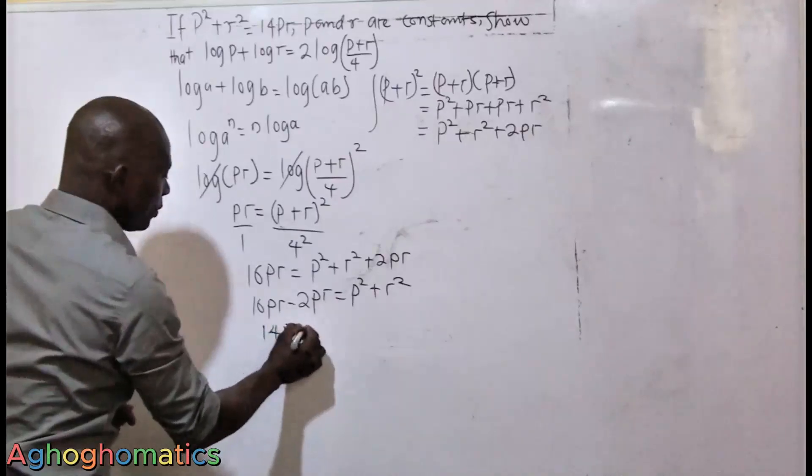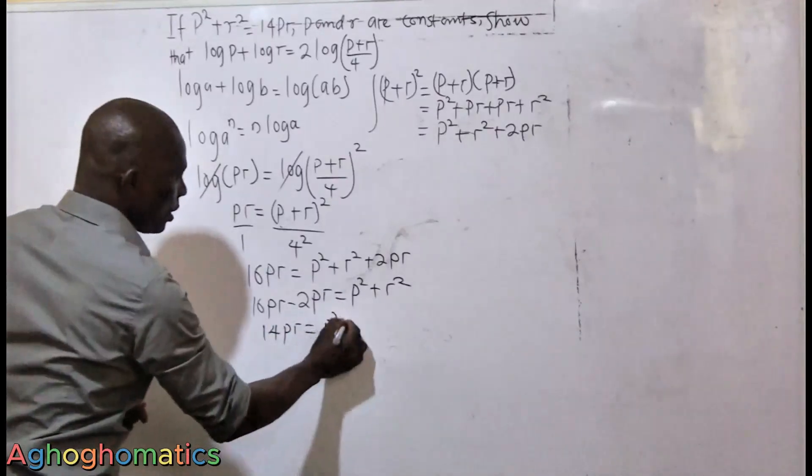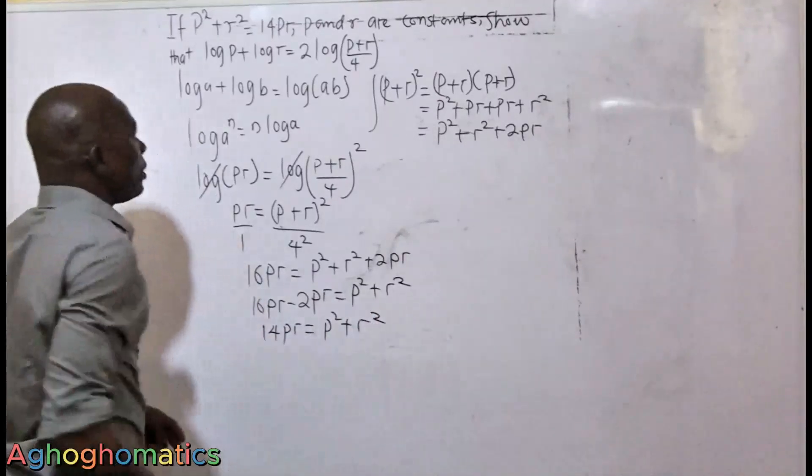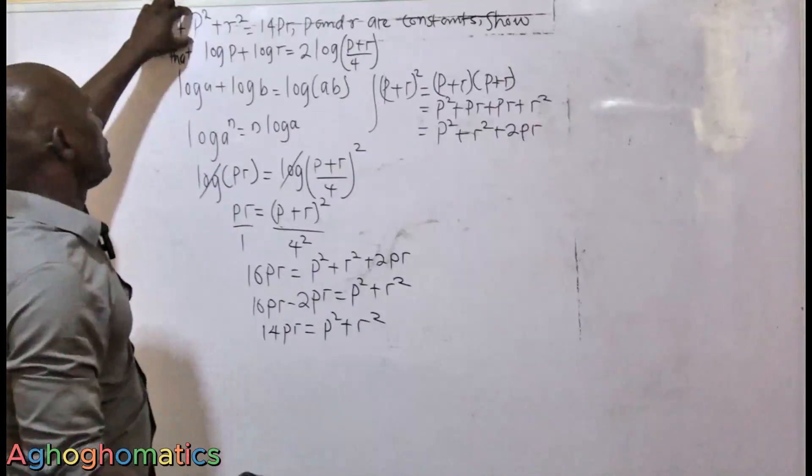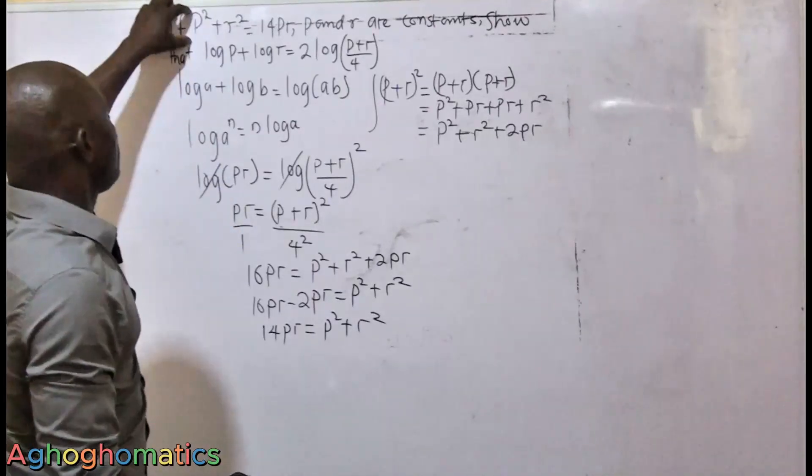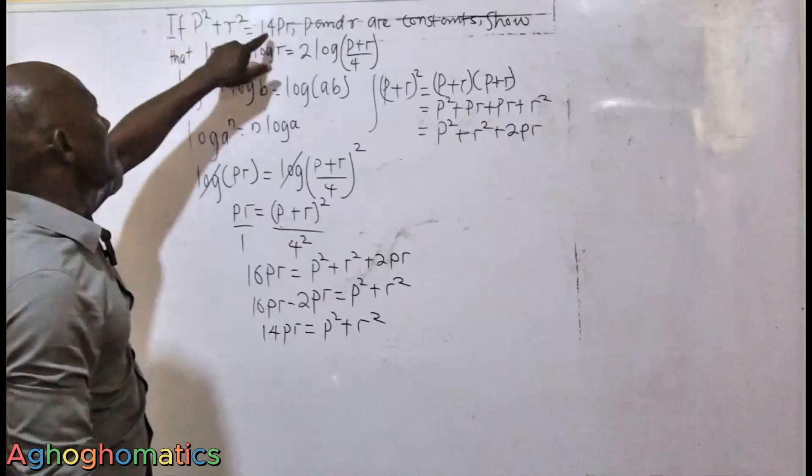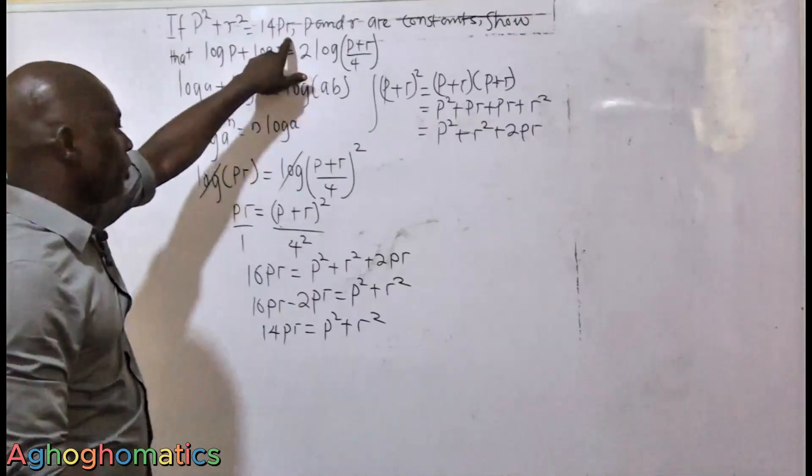You can see this is what the answer showed. It showed that if P squared plus R squared is equal to 14PR, so we are using this other part of the question to achieve this.